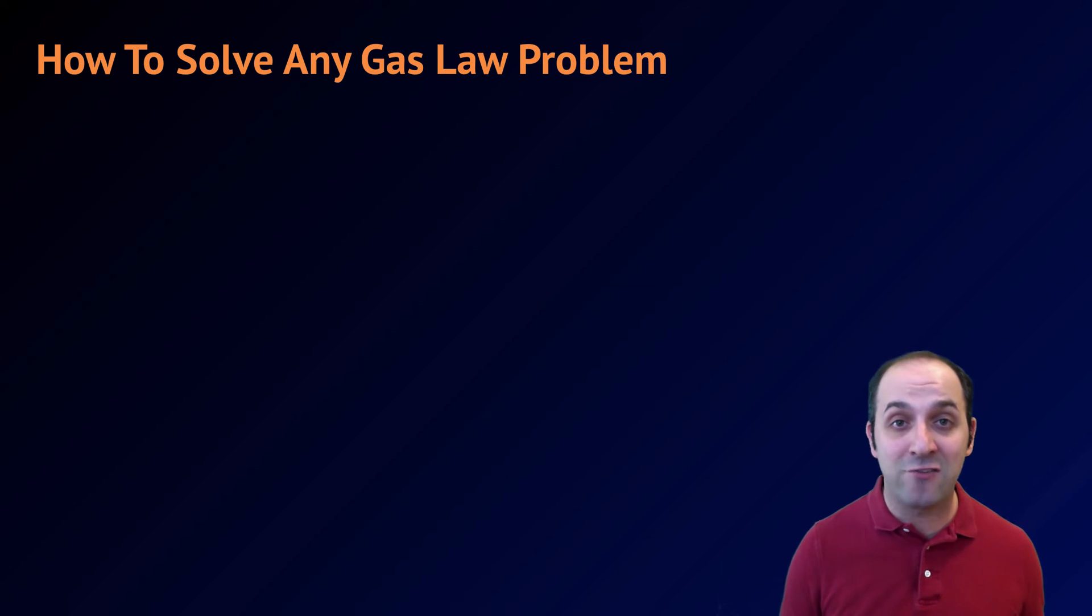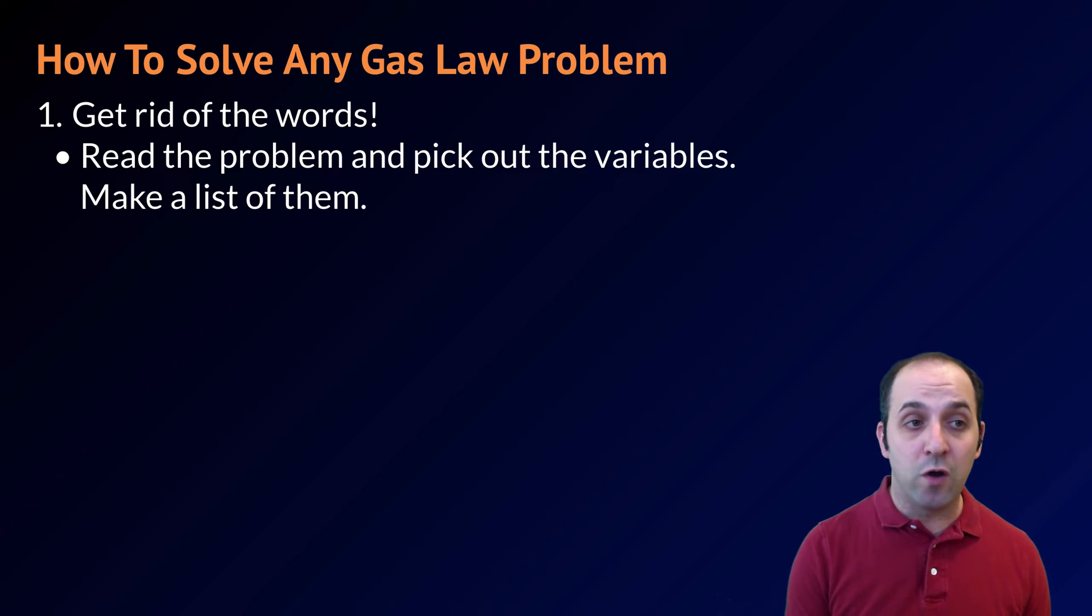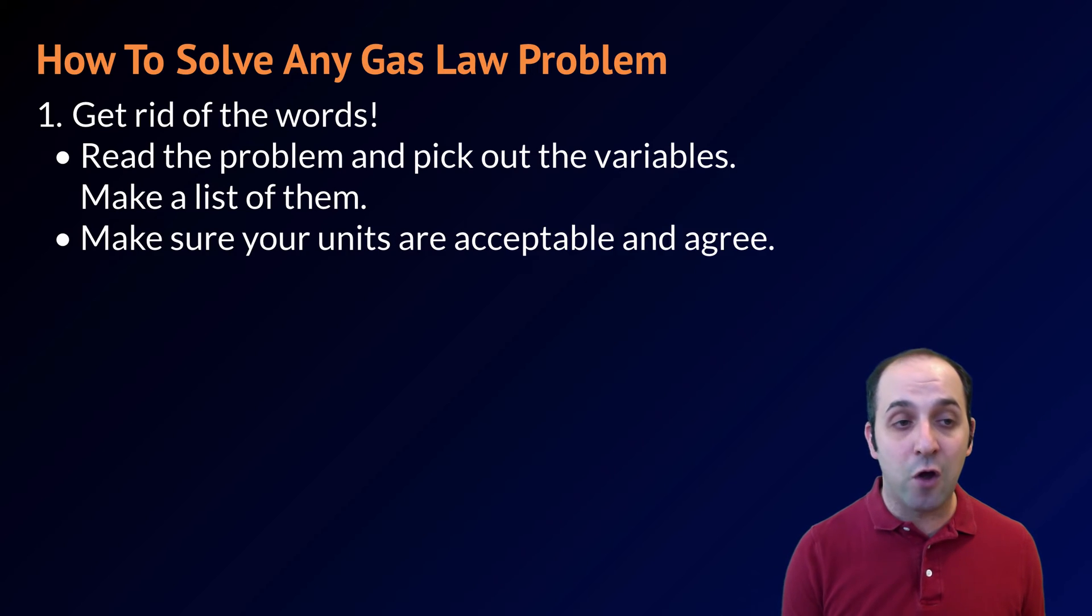Now that we see the Combined Gas Law, we can talk about how to solve any gas law problem we're ever given that deals with pressure, volume, and temperature. The first thing that I want you to do is get rid of the words. Go into the problem and take out each of the variables from the paragraph. Get P1, V1, T1, P2, V2, and T2.